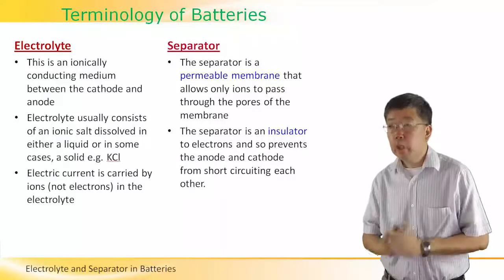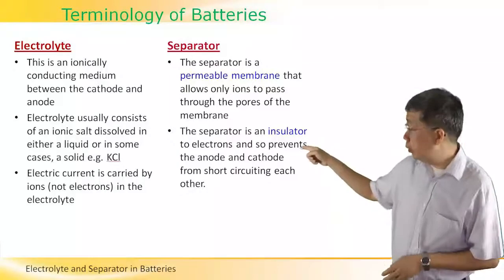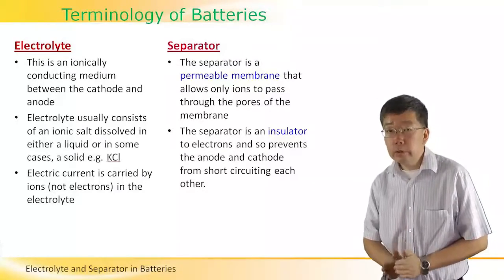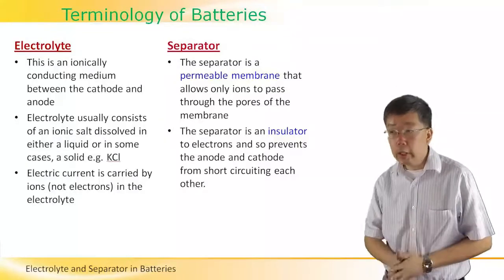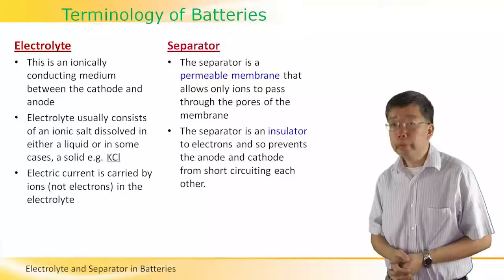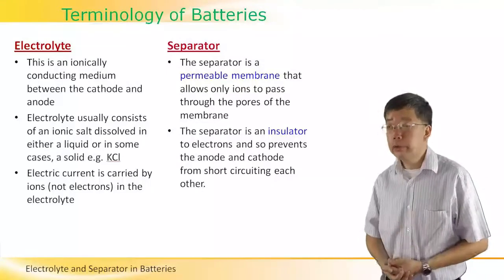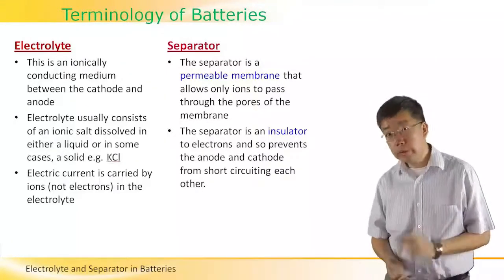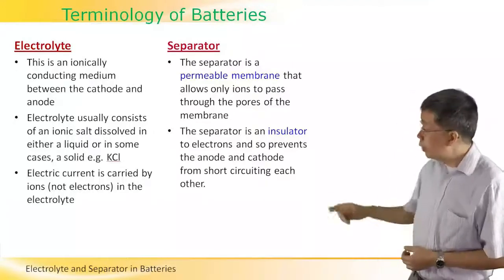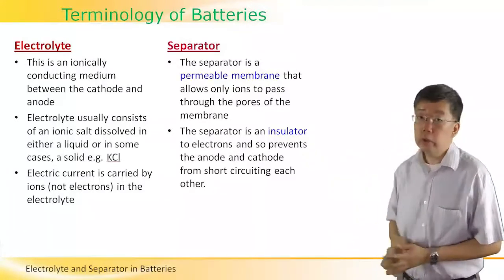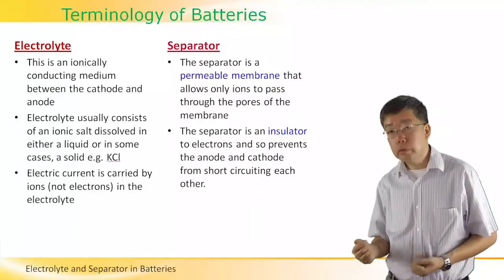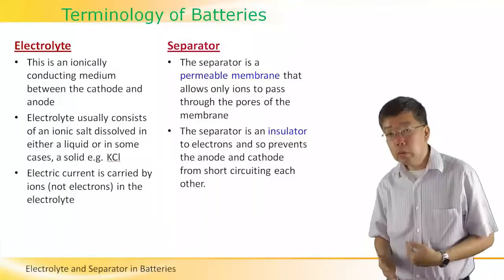The fourth component of any battery is the separator. As the name suggests, the separator is used to separate the cathode and the anode. It is a permeable membrane which allows ions to pass through its pores — the little holes of the membrane — freely. However, because the separator is also an electrical insulator, it will prevent the anode and cathode from short-circuiting each other.